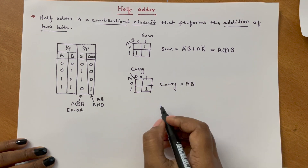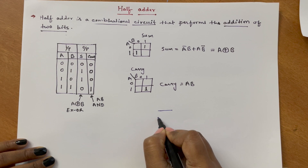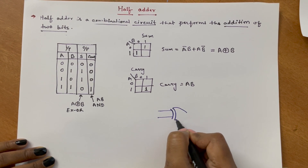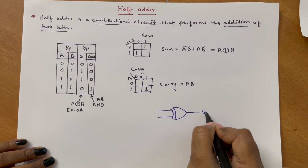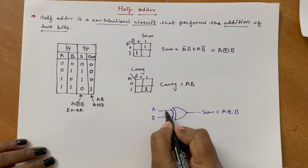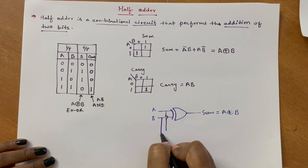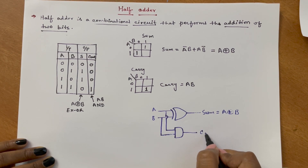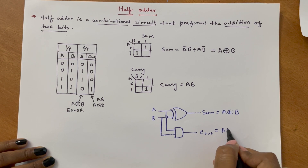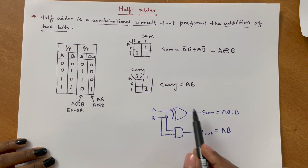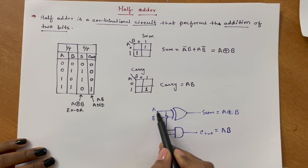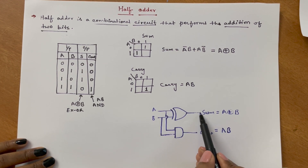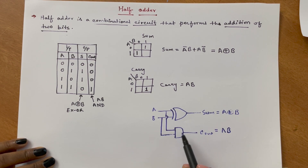For sum, we need a 2-input XOR gate — this will give the sum output. And for carry, we need an AND gate — this will give the carry output. So the half adder is nothing but a combinational circuit that performs the arithmetic operation of addition of two single bits and gives output as sum and carry. We can design it using an XOR gate and an AND gate.